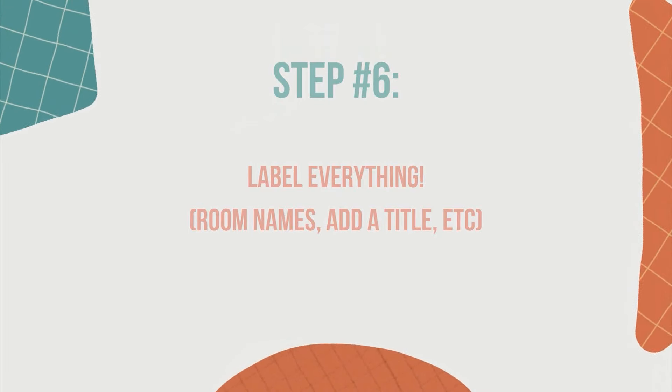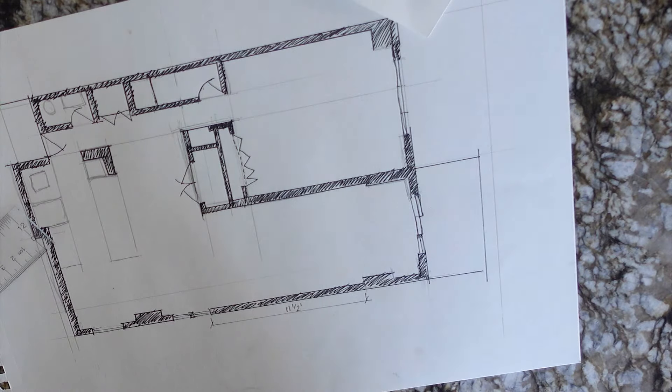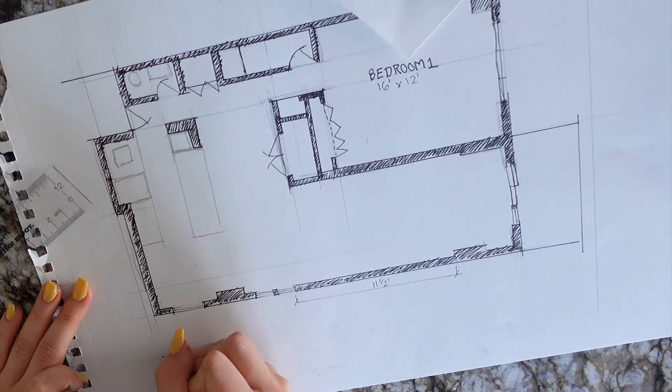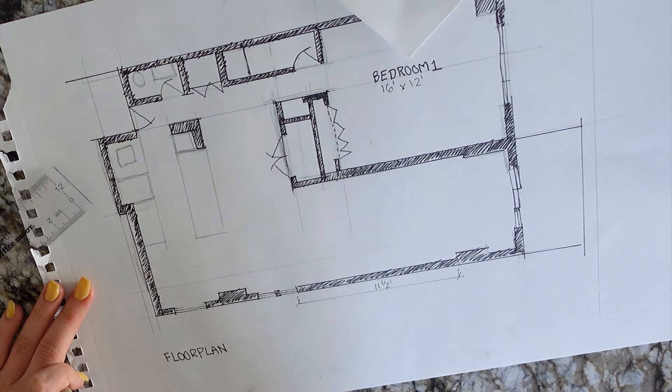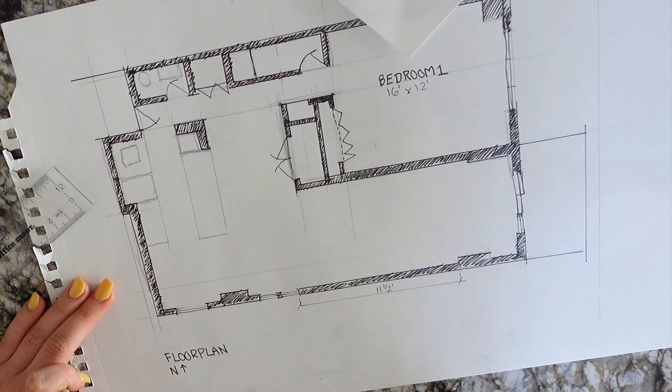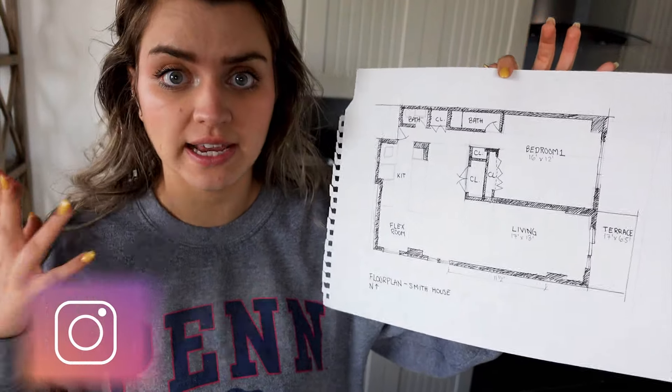The last step, step number six, is to label everything. Labels help people read your floor plan. My recommendation is to start big and end small — label the room first, so this would be my living room, then label the bedroom, kitchen, or bathroom. Then start labeling the dimensions of the living room. If you used an architectural scale ruler, you'd want to include your scale reference at the bottom. You can add important notes with text, and it's a good idea to include a north arrow using the iPhone compass app to determine what direction your building is facing.